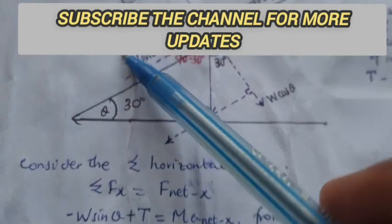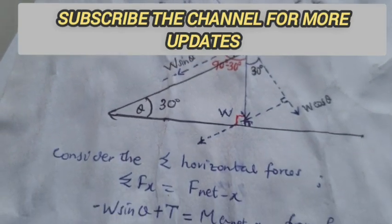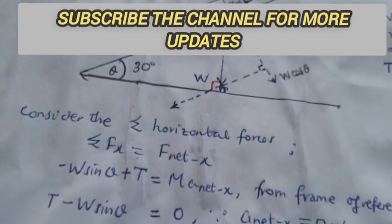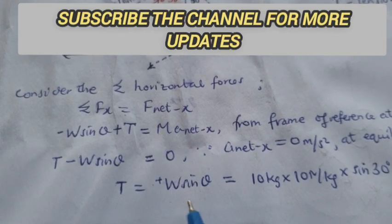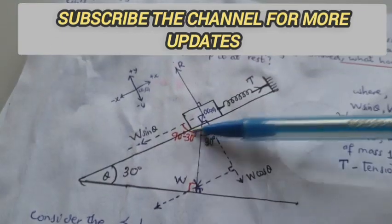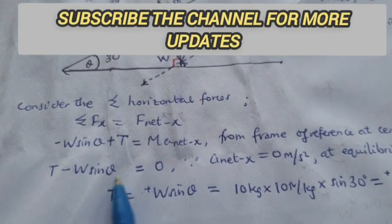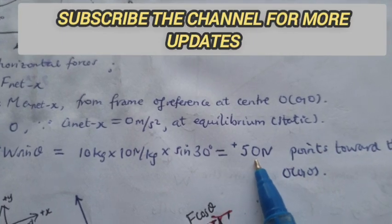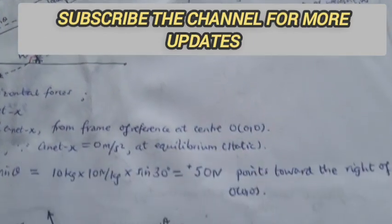W sin theta is going toward the left, that is negative x-axis, and this is negative. While T is positive, and here is our net acceleration times the mass of the body. Because it is static equilibrium, there's no motion at all and it is zero. Then our solution will be 50 Newtons, towards the right, as we get positive.